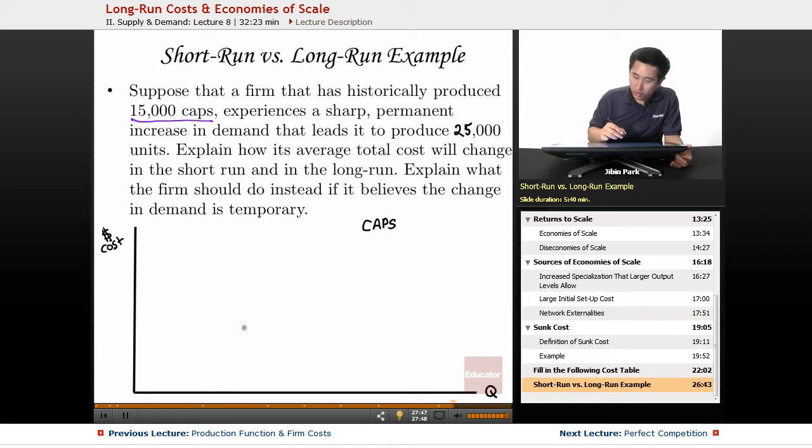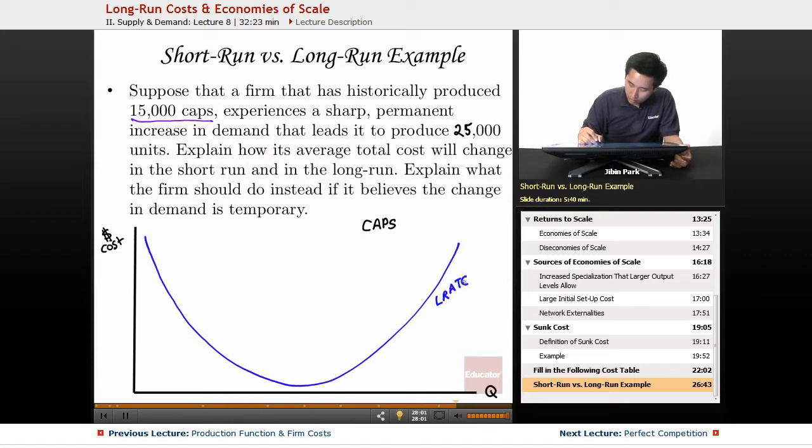So what you're going to do here is you're going to draw a long LRATC here. At the point right here, you do the long LRATC, long-run average total cost. And here, we're going to jot that as being 15,000.